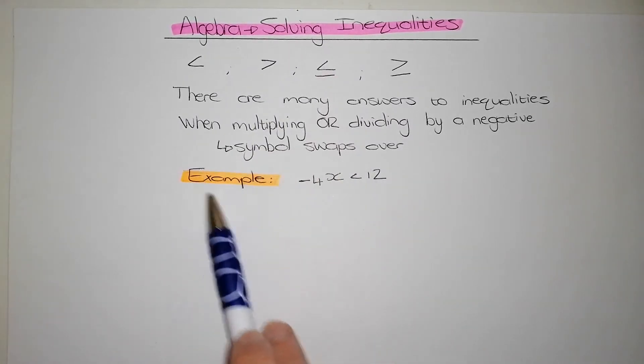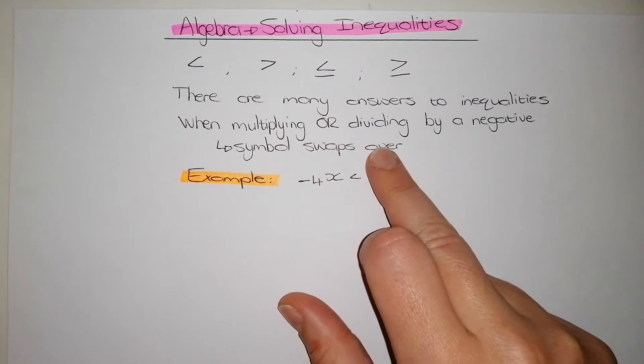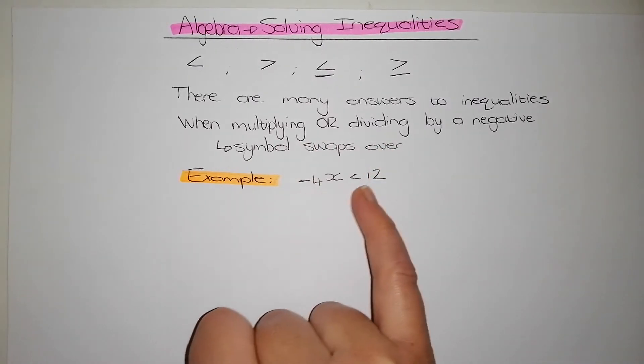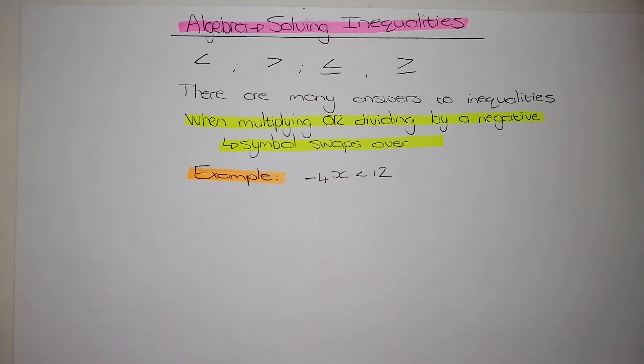So let's look at this example. One thing that is extremely important to remember before we go into the example, is that when we are multiplying or dividing by a negative, like we have over here, then the symbol we're using swaps around. Right, let's go into the example.